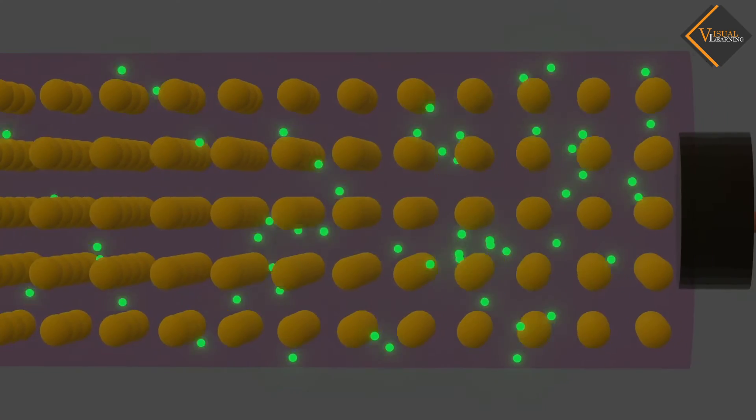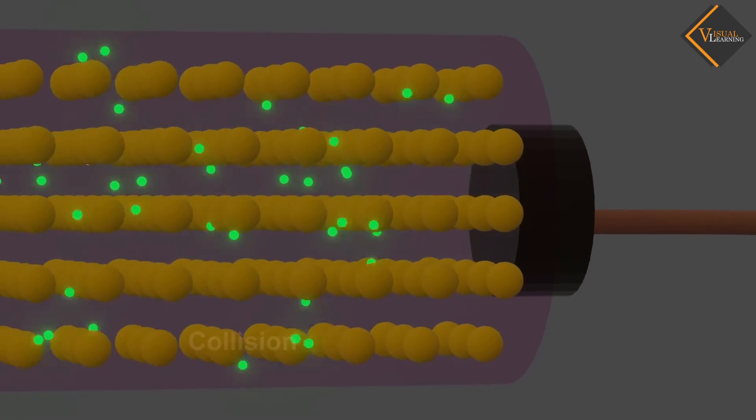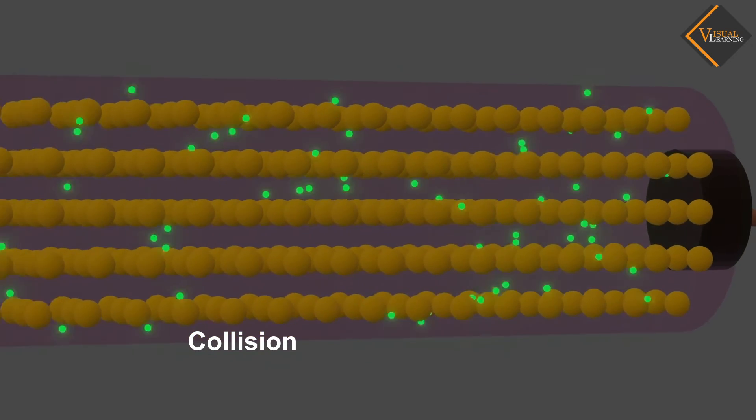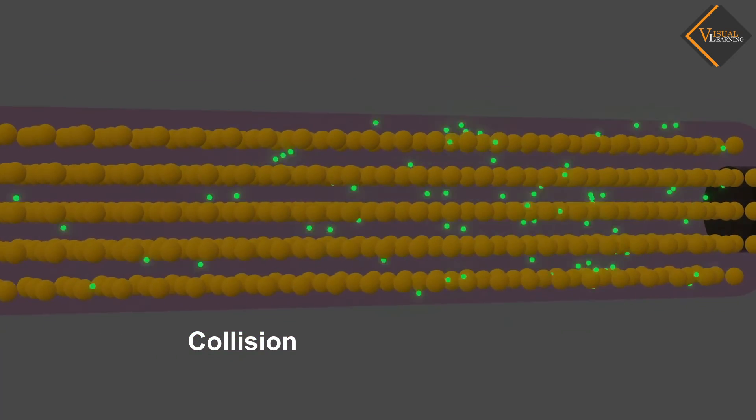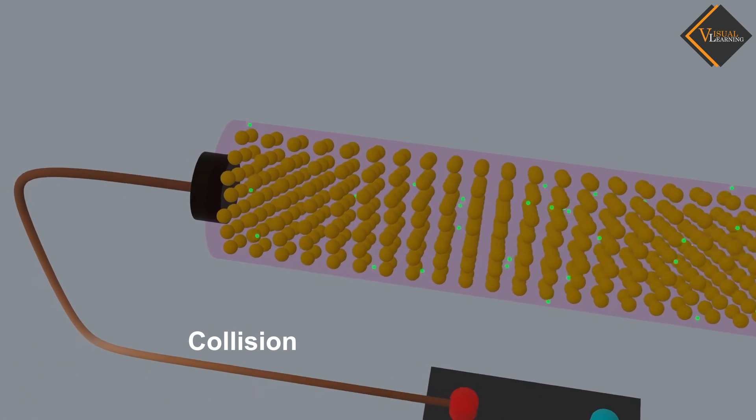Due to the large number of atoms in the conductor, electrons experience collisions with metal ions. These collisions cause the electrons to change their direction and velocity.